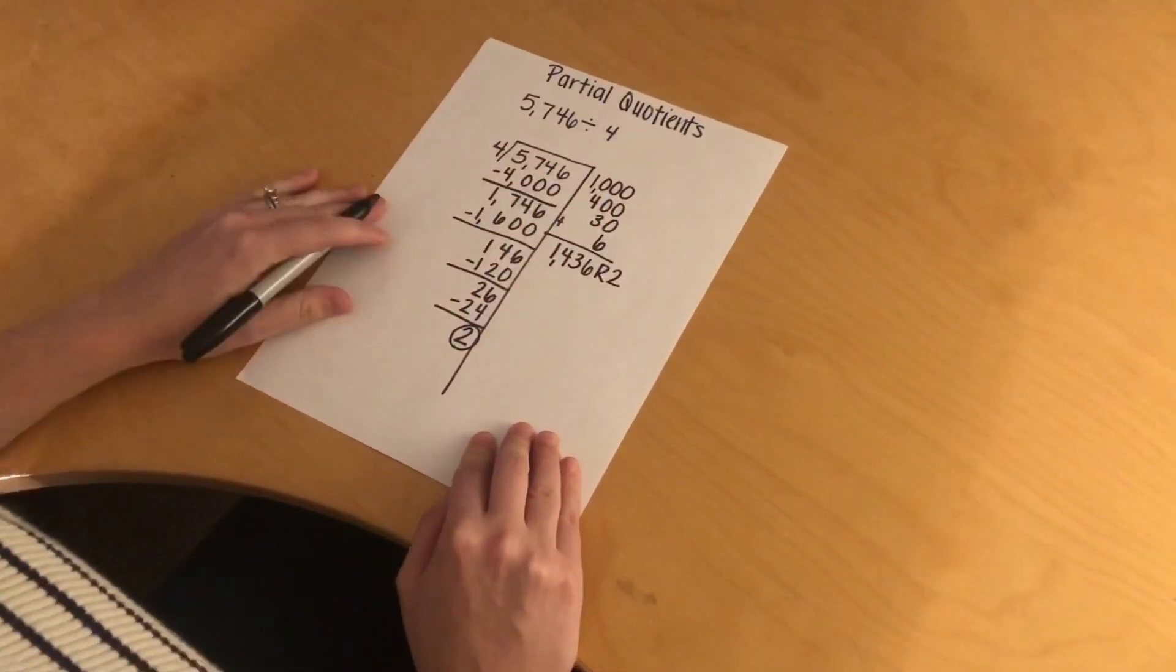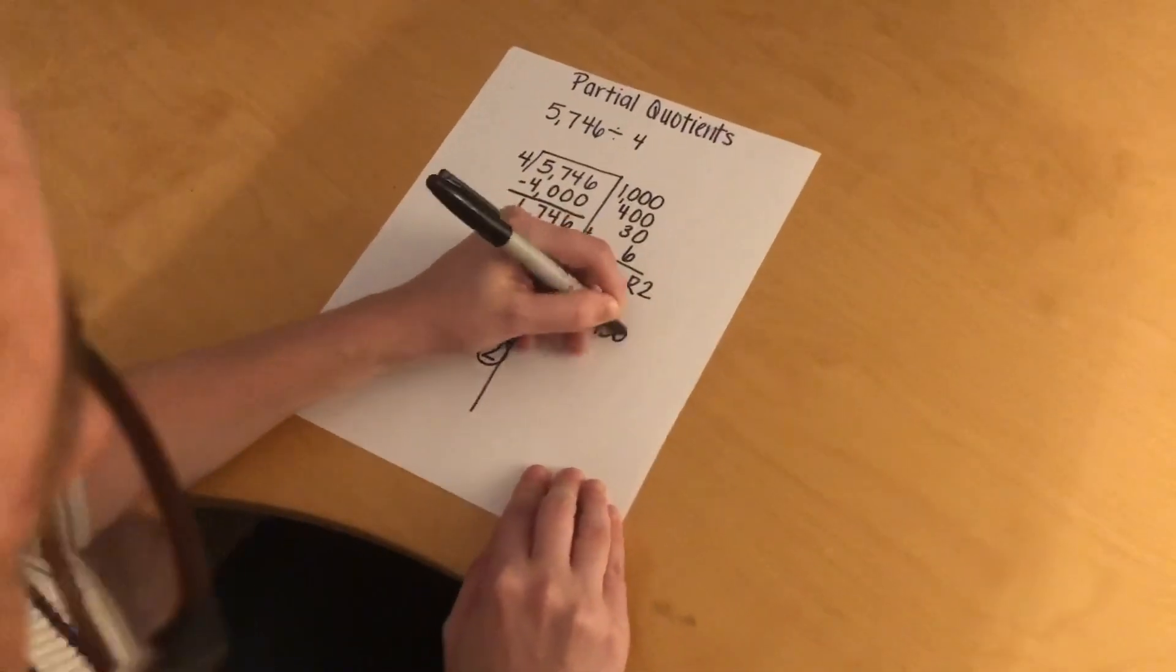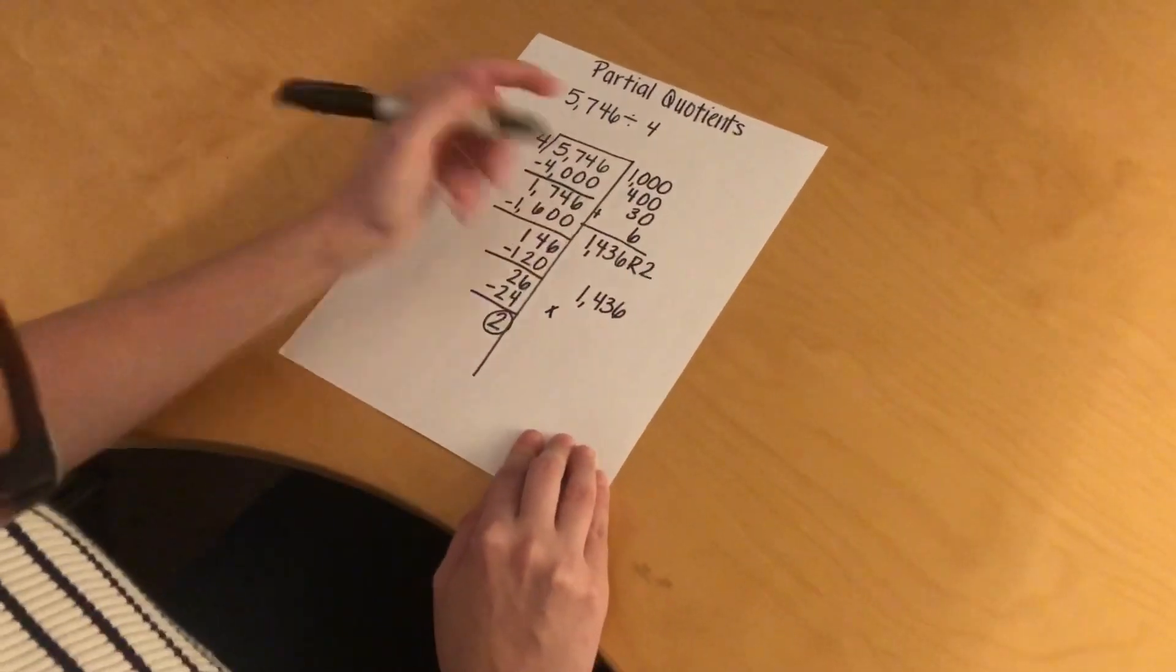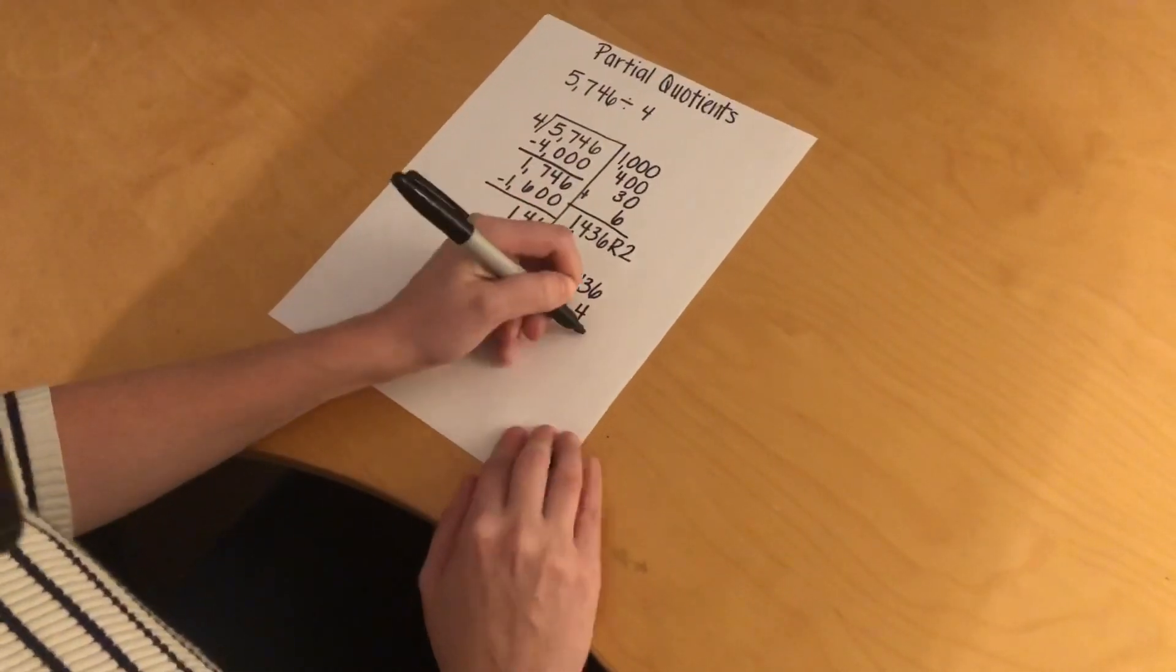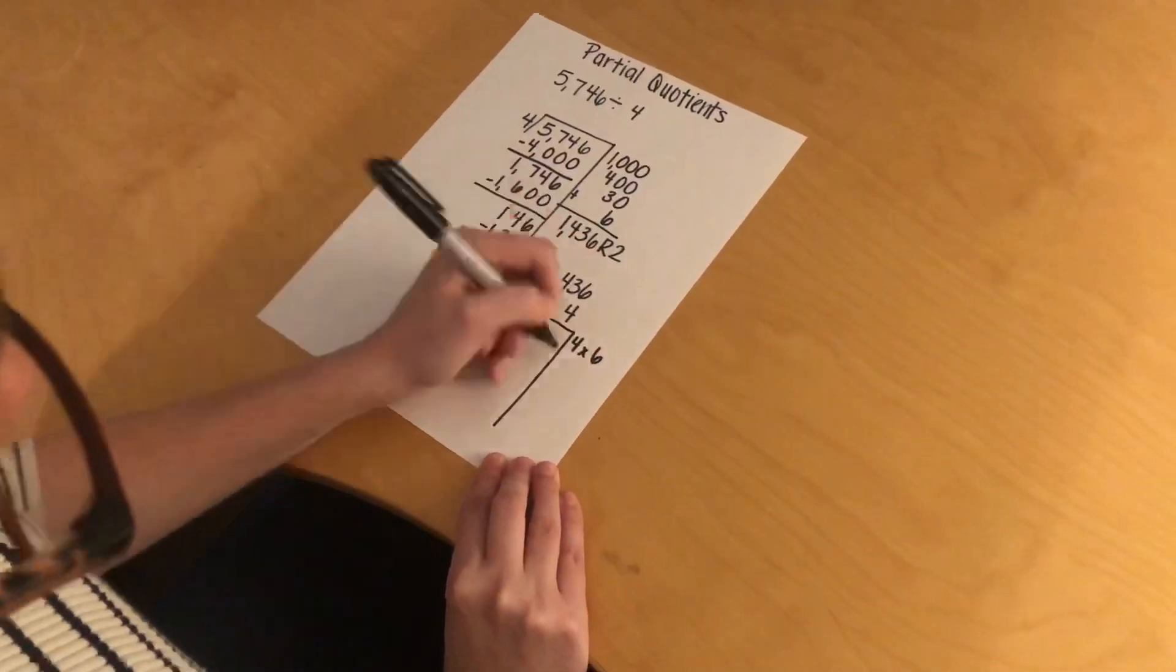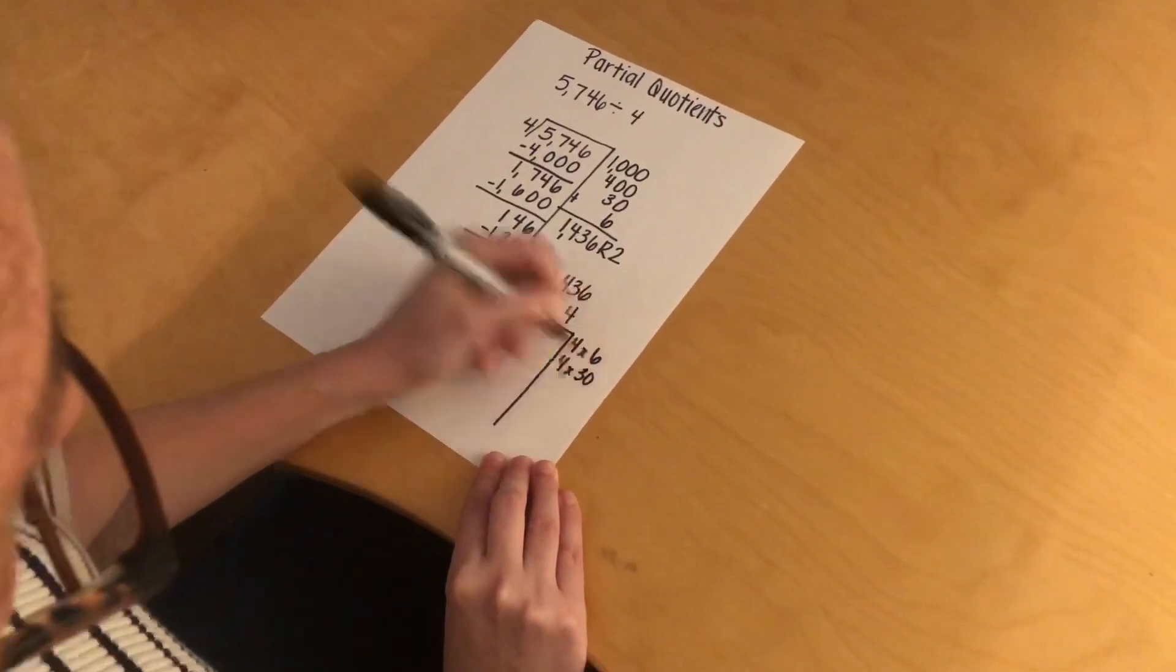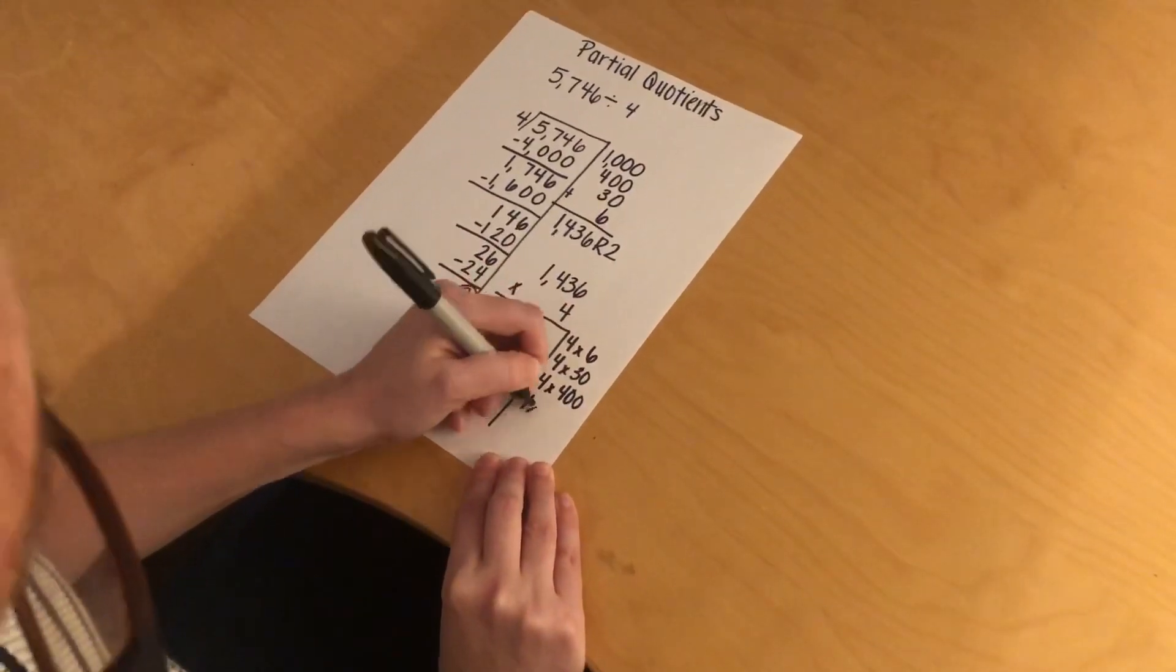And as always, I can check my answer by using 1,436 times my divisor of 4, and then I would use my partial products: 4 times 6, 4 times 30, 4 times 400, and 4 times 1,000.